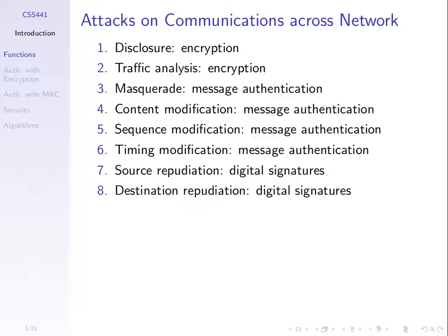If someone intercepts the message they cannot decrypt and get the message contents. So disclosure, or releasing the message contents — how do we solve that? Encryption. Traffic analysis we haven't really talked about and we won't go into much depth. But we can also use encryption to try and hide patterns, plus other techniques like adding random messages or delaying messages and sending them at different times. The idea with traffic analysis was that the attacker observed the sequence or frequency of messages. By modifying our frequency of messages, we can hide that pattern.